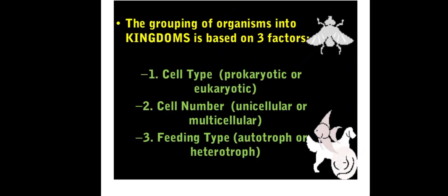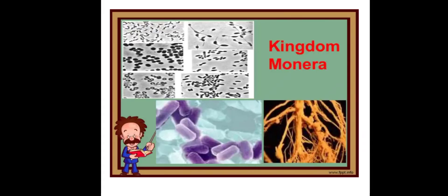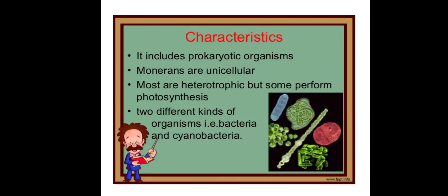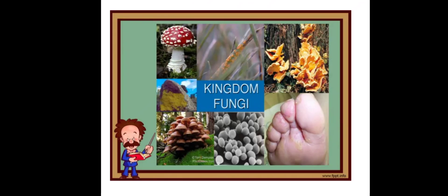We also learned about the hierarchy of classification. The grouping of organisms into kingdoms is based on three factors: cell type — whether they are prokaryotic or eukaryotic; cell number — unicellular or multicellular; and feeding type — whether they are autotrophic or heterotrophic. We started with Kingdom Monera and learned about Kingdom Protista.